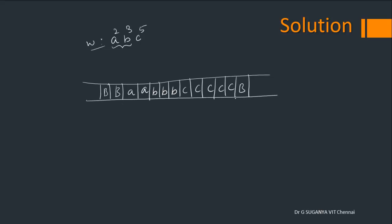Initially the tape will look like this: 2 a's followed by 3 b's followed by 5 c's, with the input pointer pointing to the first symbol. We are not concerned with how many a's and b's there are separately; the number of a's and b's put together must equal the number of c's. When an 'a' is found, replace it with x, move towards the right, find a c, replace it with y, then move towards the left until you see an x.